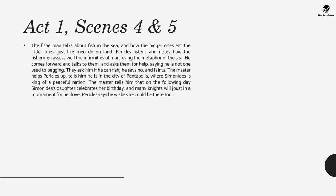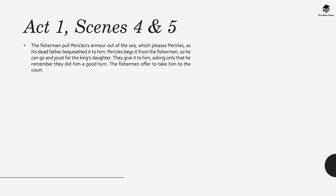Pericles comes forward and asks the fishermen for help, saying he is not one used to begging. They ask if he can fish; he says no. The master helps Pericles up and tells him he is in the city of Pentapolis, where Simonides is the king of a peaceful nation. On the following day, Simonides's daughter celebrates her birthday and many knights will joust in a tournament for her love. The fishermen pull Pericles's armour out of the sea — bequeathed by his dead father — and Pericles begs it from them so he can joust for the king's daughter. They agree and offer to take him to the court.